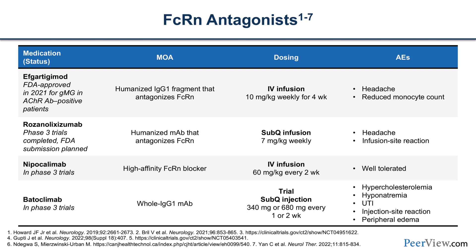There are several FcRn antagonists. The only one that is approved is efgartigimod — it's an IgG1 fragment, the first in class. It's administered by intravenous infusion on four weekly doses, then patients are observed. We've seen durability ranging from every four to six weeks in 11 percent of patients, to more than 50 percent having durability of response in excess of two months, and a third in excess of three months.